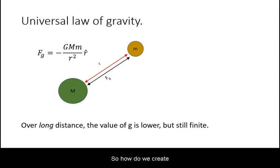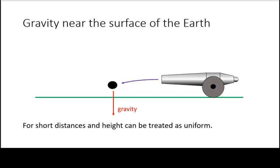So, how do we create an orbit? From our everyday experience we know that gravity makes things fall down to the ground. This is the same for any object regardless of its mass.